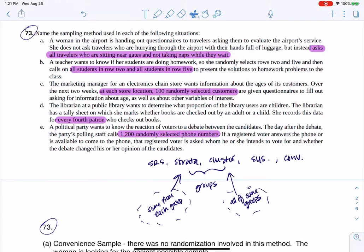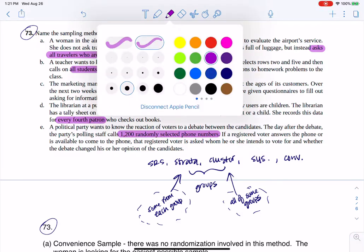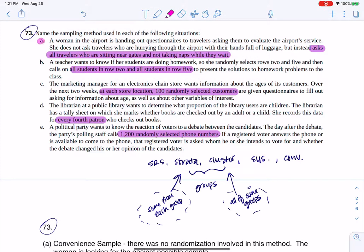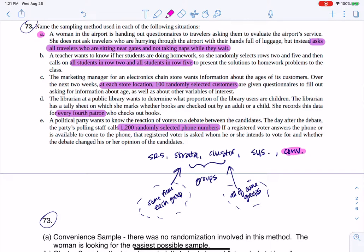So let me delete this. All right. So if you look on this first one here, let me change the pen color so we can distinguish. So for part A, right, this woman's passing out questionnaires. And it says right here that she asks the travelers that are sitting near the gates and not taking naps. And that is a convenience sample, right? And so that's where you see me putting down here at the bottom, there's no randomization in this method. She's just looking for the easiest possible sample.